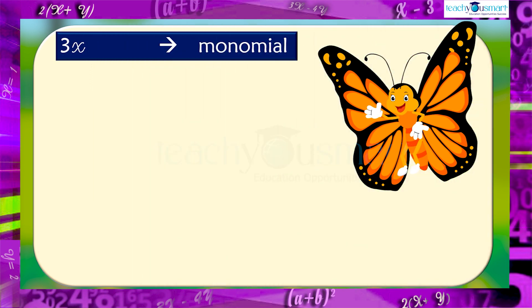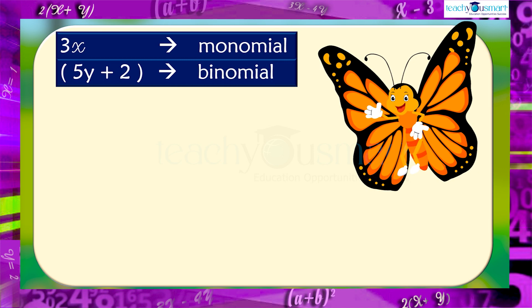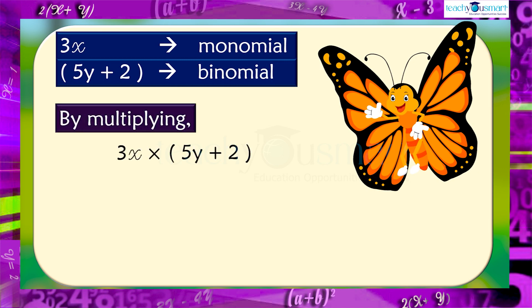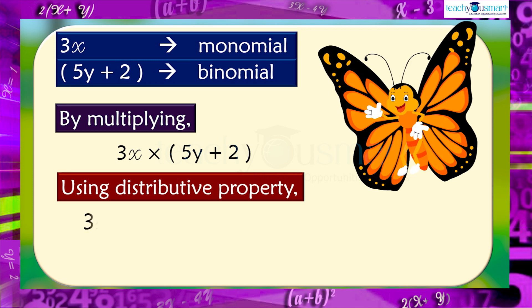Let's take a monomial 3x and binomial 5y plus 2 and multiply it. By multiplying using distributive property, 3x multiplied by 5y plus 2 equals 3x multiplied by 5y plus 3x multiplied by 2 equals 15xy plus 6x.